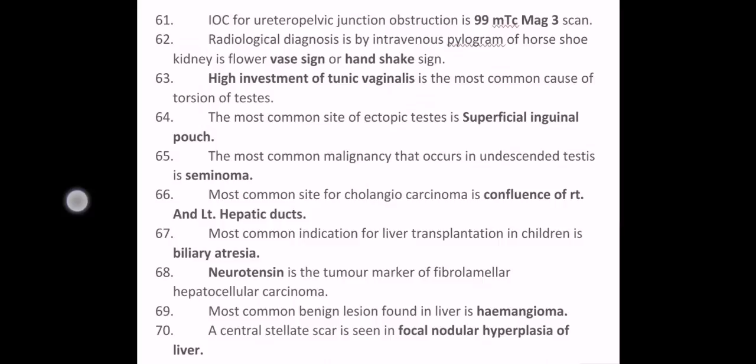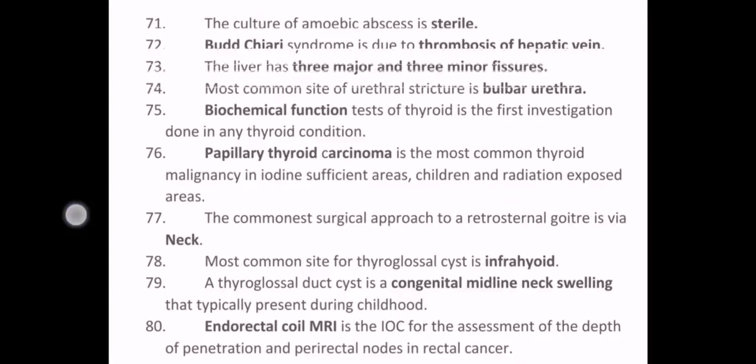The most common site of cholangiocarcinoma is the confluence of the right and left hepatic ducts. The most common indication for liver transplantation in children is biliary atresia. Neurotensin is the tumor marker of fibrolamellar hepatocellular carcinoma. The most common benign lesion found in the liver is hemangioma. A central stellate scar is seen in focal nodular hyperplasia of the liver. The culture of amoebic abscess is sterile. Budd-Chiari syndrome is due to thrombosis of the hepatic vein. The liver has three major and three minor fissures.